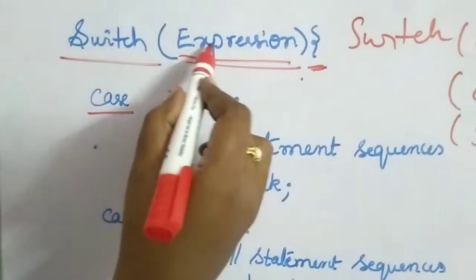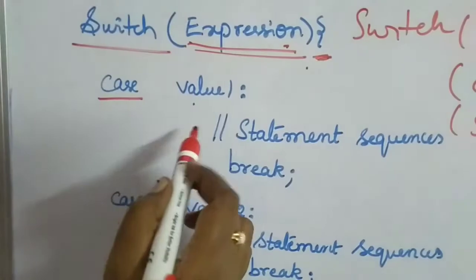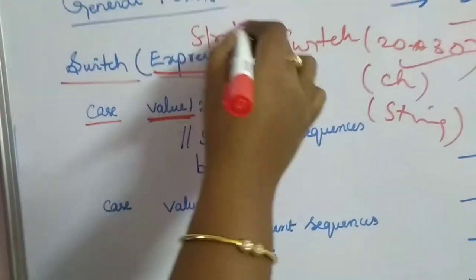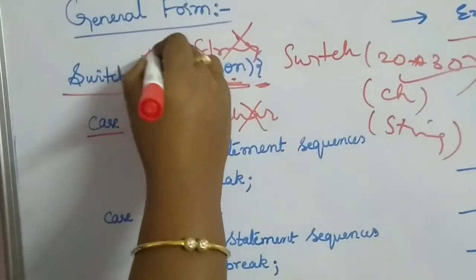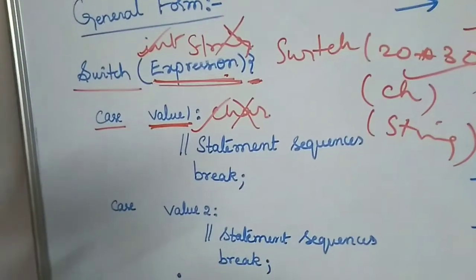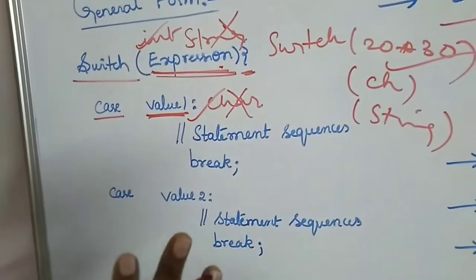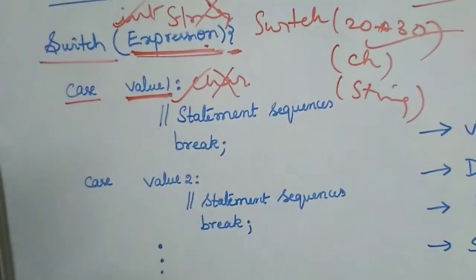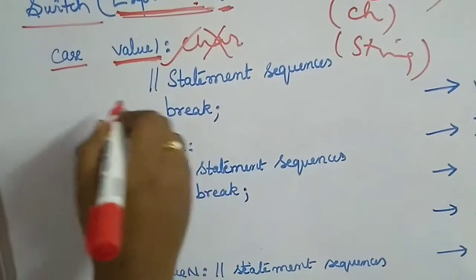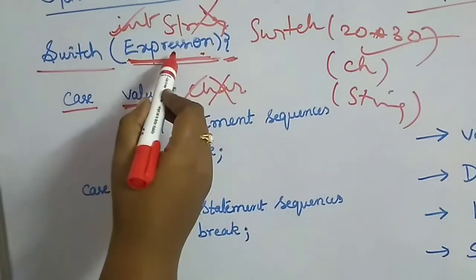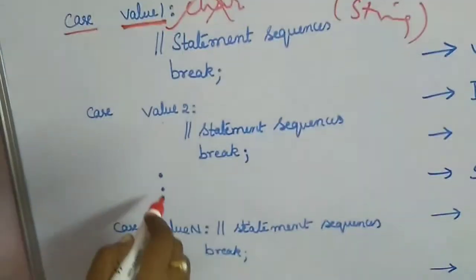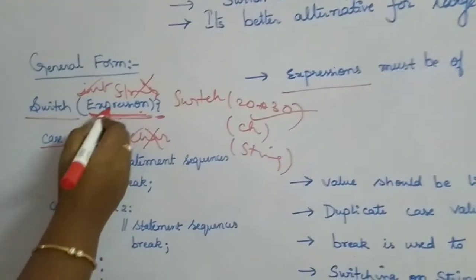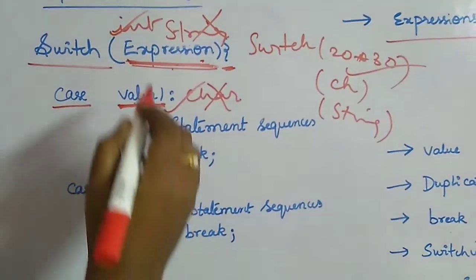Each case is written in lowercase, followed by a space and a value. The expression type and the case value must be compatible. For example, integer and char are compatible, but string and char, or string and int, are not. The expression is checked for equality against each case value — that is why switch can only test for equality.